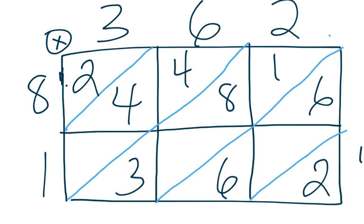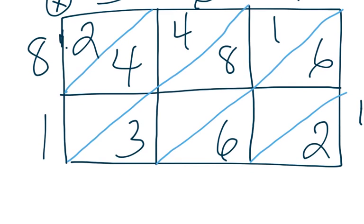So now I need to add going down my diagonals. So this is 2. 6 plus 6 is 12. So write down my 2, regroup 1. So now 8, 3, and 1 is 12. Plus another one is 13. So 13.